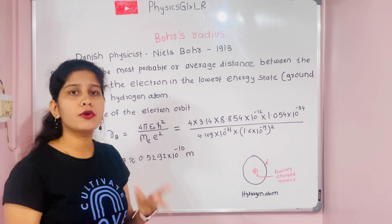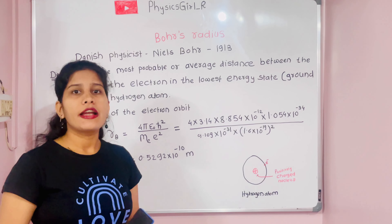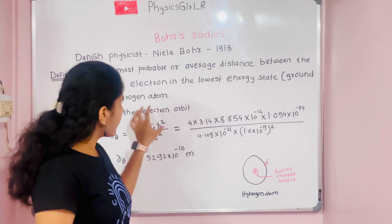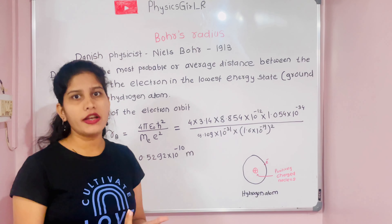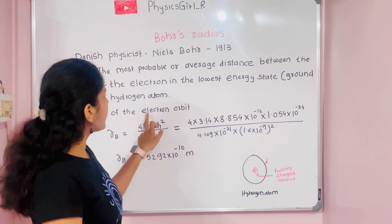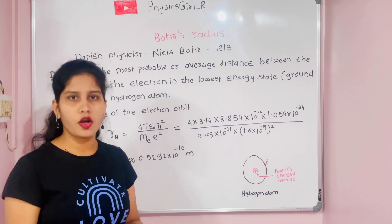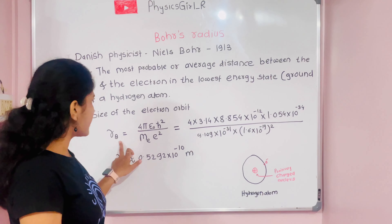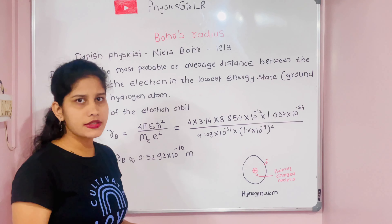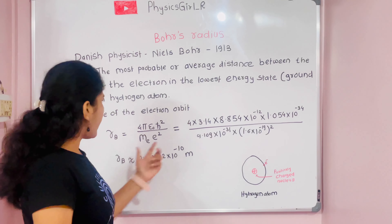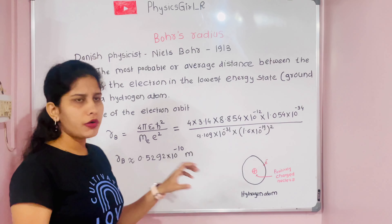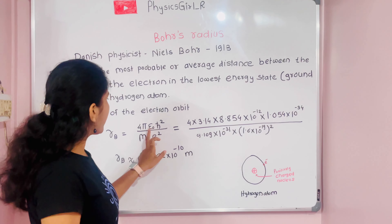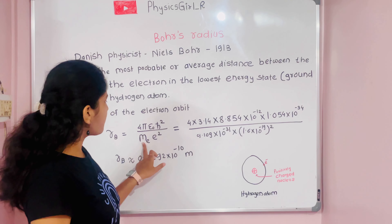Now what is the use of Bohr's radius? By using the Bohr radius we are able to calculate the electron orbit size, also called the electron orbit radius. This is the significance of the Bohr radius. It is given by the symbol Rb, where B stands for Bohr and R for radius, and the standard formula is: Rb = 4πε₀ħ² divided by mₑe².